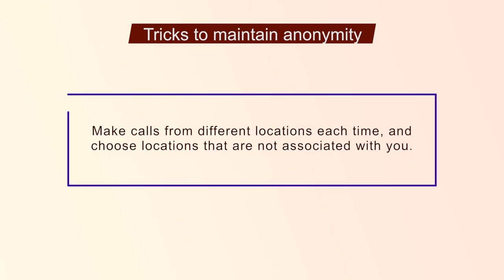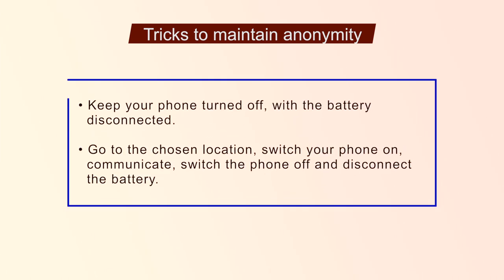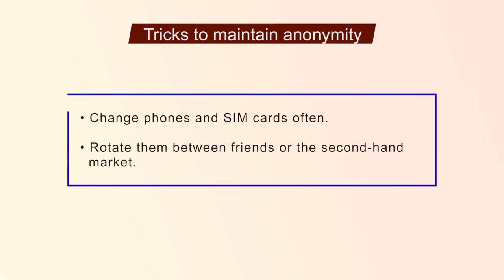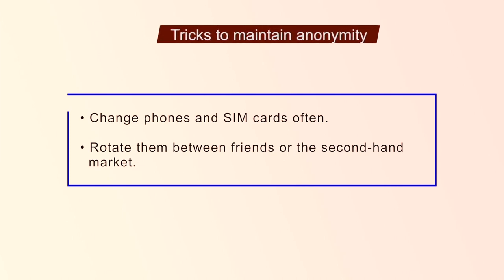Consider adopting the following tricks. Make calls from different locations each time and choose locations that are not associated with you. A second technique to maintain anonymity is to keep your phone turned off. With the battery disconnected, go to the chosen location, switch your mobile on, communicate, switch the phone off and disconnect the battery. Doing this habitually each time you have to make a call will mean that the network cannot track your movements. Another technique: change phones and SIM cards often and rotate them between friends and the second-hand market.